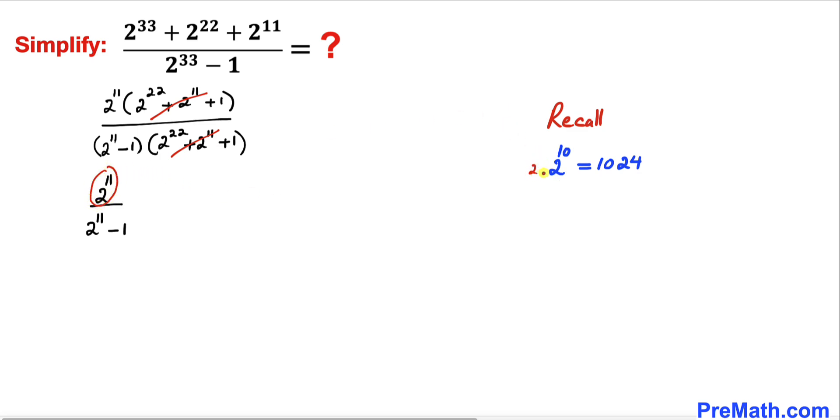Let me go ahead and just multiply both sides by 2. So this is going to give us 2 power 11 equals 2 times 1024, which is going to give us 2048. Therefore this numerator is going to become 2048.